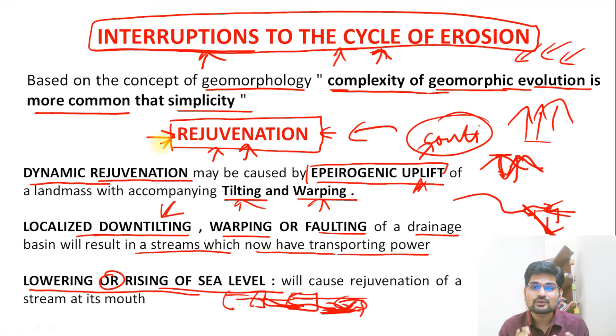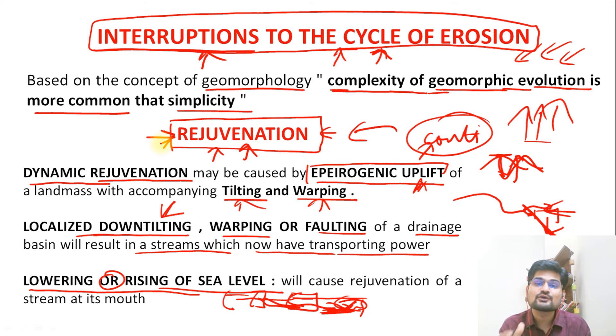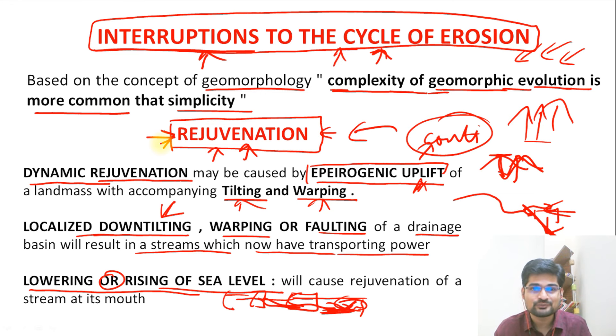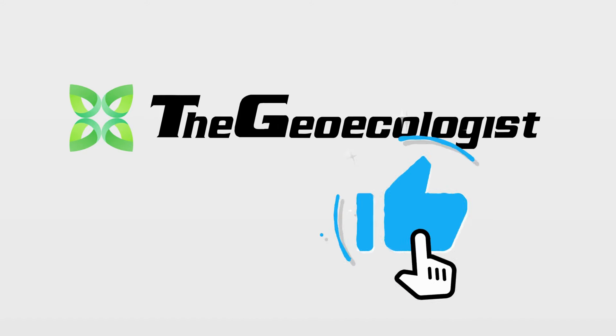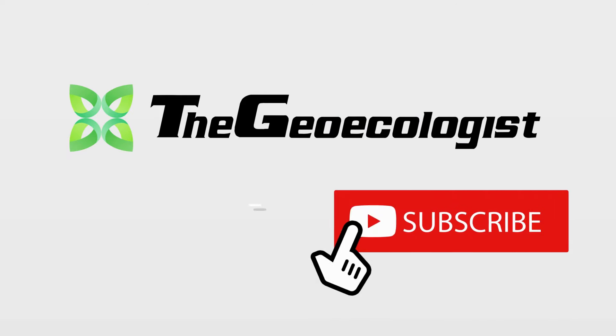Davis's concept is not an absolute way of looking at the landscape when we actually go to the field — it may look complex, but for understanding this concept, the theory holds key value. Now that we have learned about the cycle of erosion by William Morris Davis, in lectures to come we are going to talk about Penck's concept as well as L.C. King's concept. Stay safe, stay tuned, and all the best.